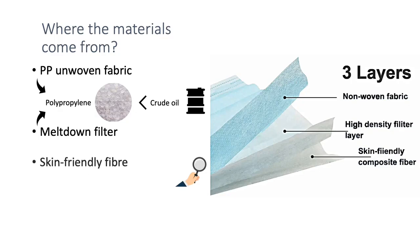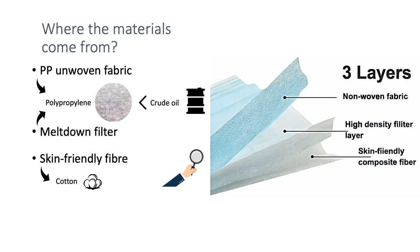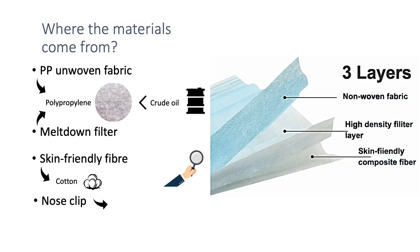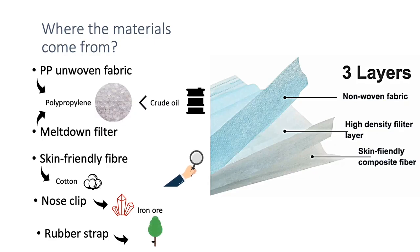Skin-friendly fiber, on the other hand, is made from cotton textile. And don't leave the other little gadgets out: the metal bar used on the nose clip derives from iron ore, while the rubber strap and edges come from rubber.